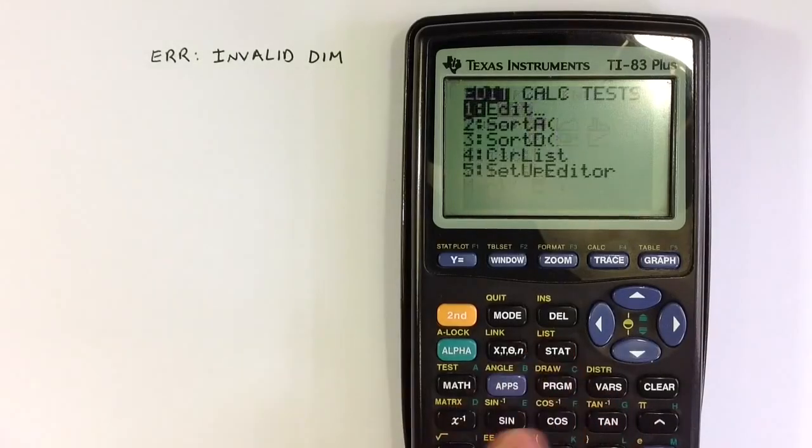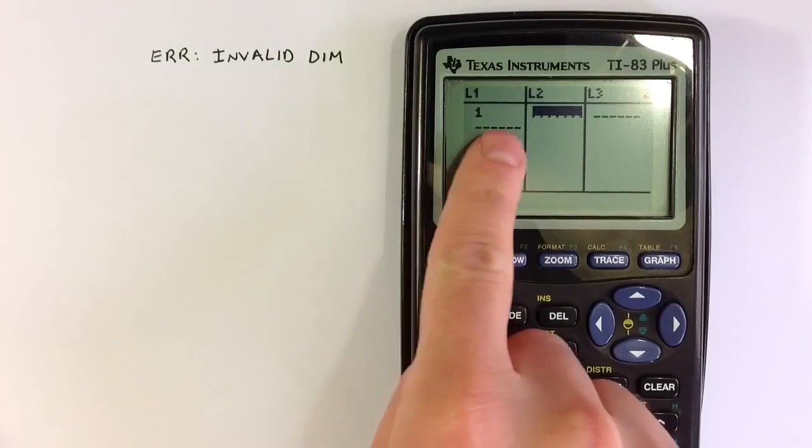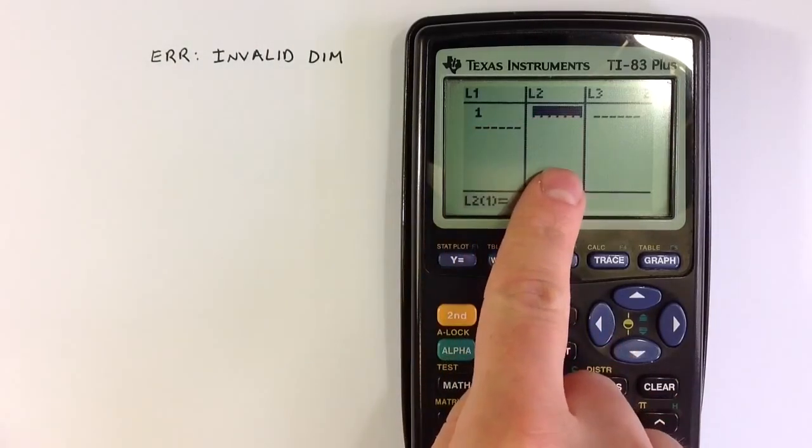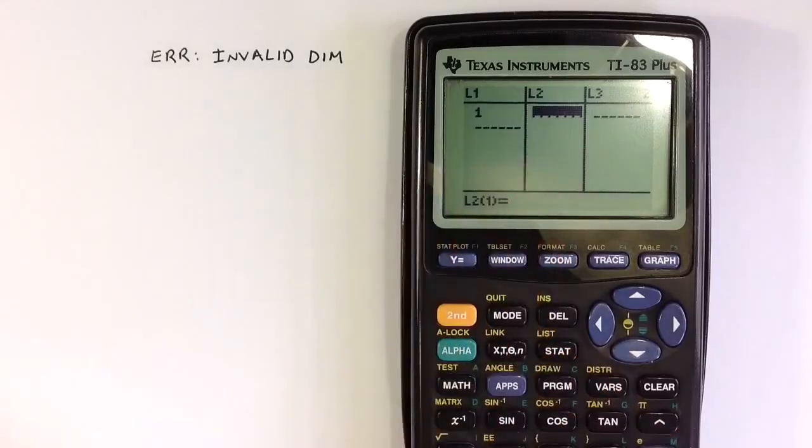So if I go over to the stat menu and choose the list editor, we see we got an invalid dimension because there was one value in list 1, but there's nothing in list 2. And so you can't produce a scatter plot from that.